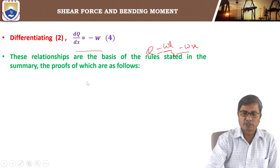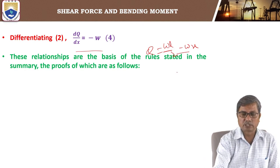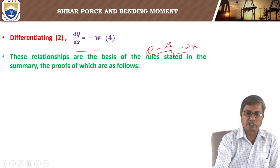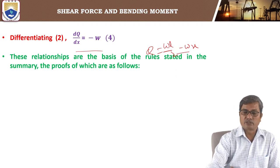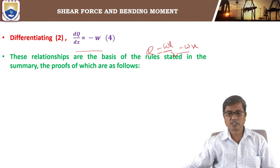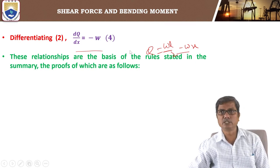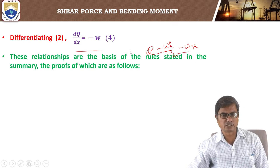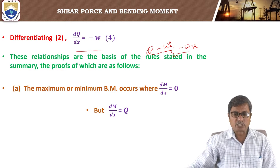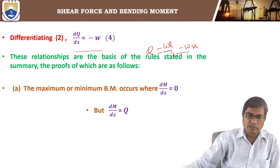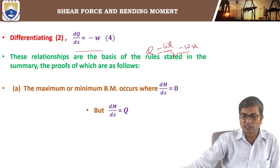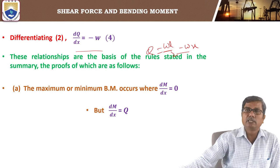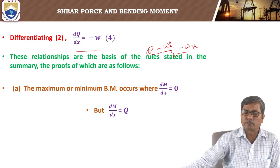These relationships are the basis of the rules stated in the summary. Let us now conclude some points. The first point: the maximum or minimum bending moment occurs where dM by dx is zero.